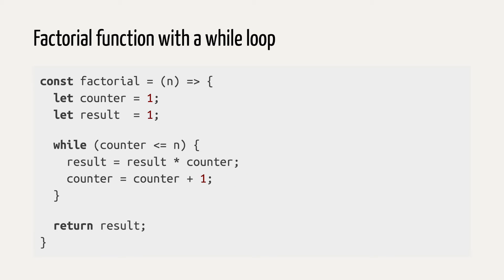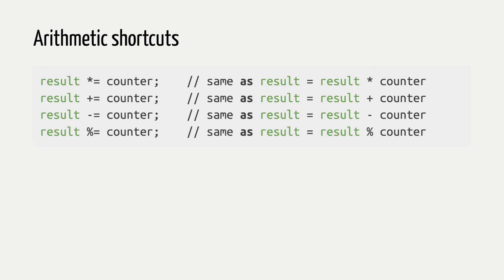Like many other programming languages, JavaScript has shortcuts for this. Instead of result equals result times counter, you can say result times equals counter. The result will be the same, this is just a shorter way to write it. And you can do the same with plus, minus and divide.